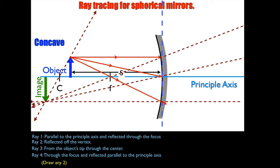Really we only need two reflected rays to find where the image is. But I'm going to give you problems where the object is located at different points, and sometimes you may not be able to draw one of the rays you think you can draw, so you need a backup plan. That's why you need to be good at drawing all four rays.